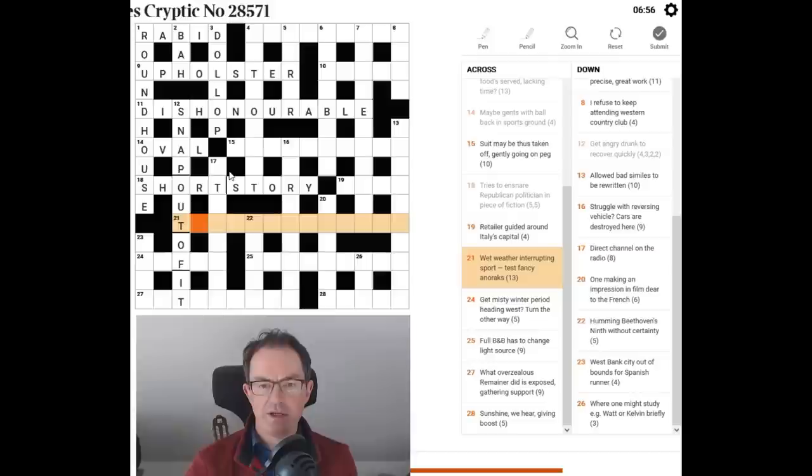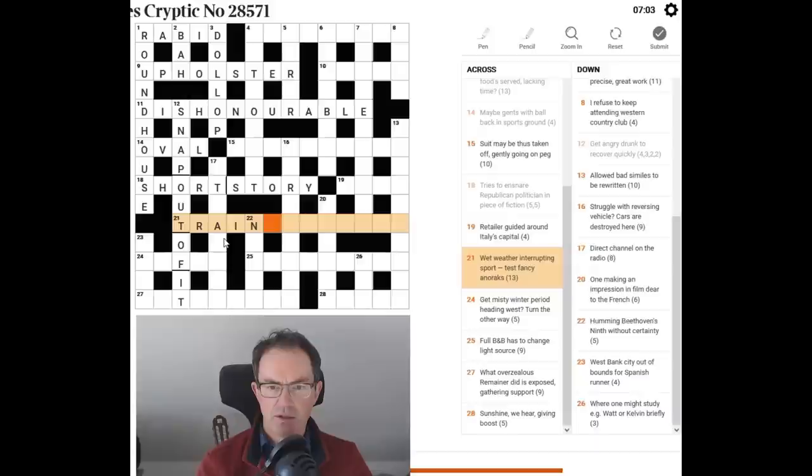21 across. This would be another useful one. Wet weather interrupting sport. So rain. It must be rain. It must begin with train spotting or something. It is. It is train. It's something like train spotting. Anorax. Must be. Wet weather. Rain.